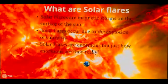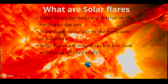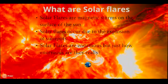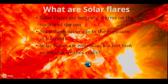Now, what are solar flares? Solar flares, according to Dr. James Webb, is a magnetic storm on the surface of the sun. Solar flares occur due to the explosion of sunspots.